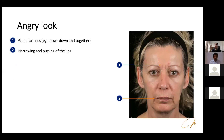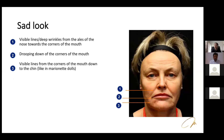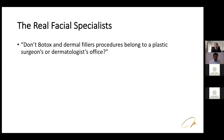An angry look results from glabellar lines — ask the patient to frown to reveal them — and narrowing or pursing of the lips. A sad look comes from accentuated marionette lines running from the corners of the mouth. Ask the patient: 'Does your face look sad?' Many will confirm others have said this. Cheek augmentation can correct both conditions, restoring a happier, more lifted appearance.